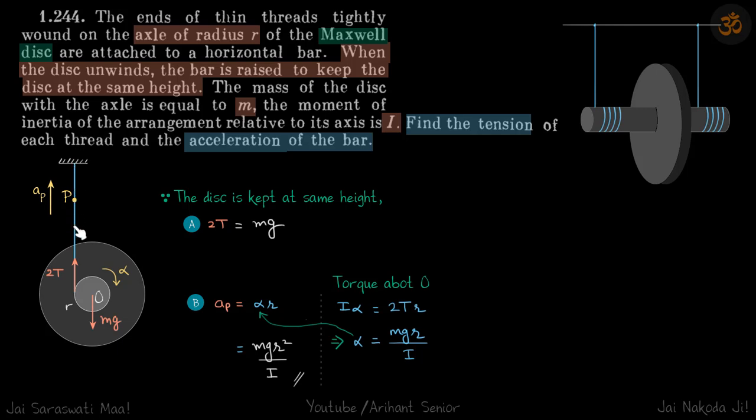...will increase the tension, and that increased tension will keep the disc at rest—not at rest, it will still be rotating with angular acceleration, but its net acceleration will be zero. We need to find the tension of each thread and the acceleration of the bar.